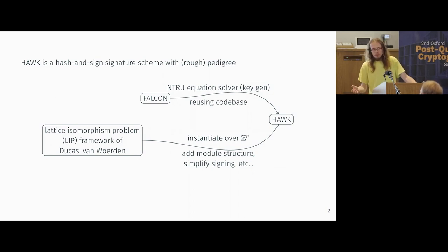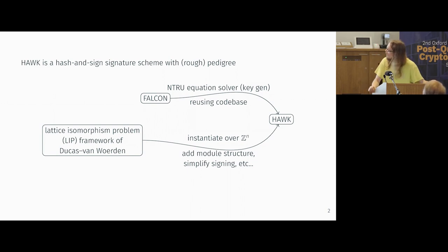Now, HAWC is, in some sense, a new kind of signature scheme. It doesn't have so many antecedents. I would say that its two main ancestors are this lattice isomorphism problem framework of Ducat and Van Verden, and also we steal a little bit from Falcon. We steal their code base and we steal their good work on solving the NTRU equation more quickly. But really, the main ancestor is this lattice isomorphism problem framework, which is quite a general framework for building things like KEMs and, in particular, signatures.